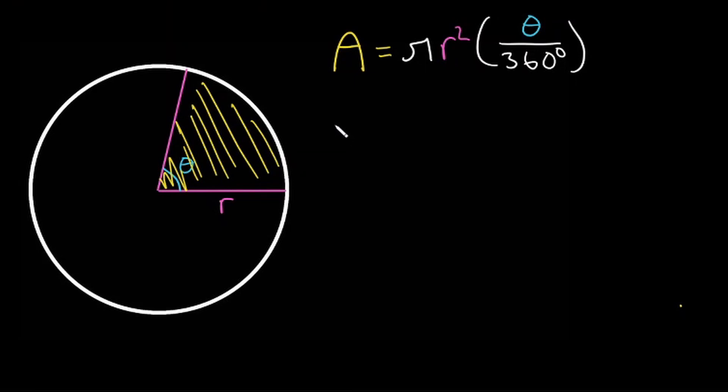What if we had it in radians, though? So we would have area is equal to pi r squared. And then we would have our theta. But what would we divide by? If our angle is in radians, our total number of radians in a circle is going to be 2 pi. And 360 is equal to 2 pi.